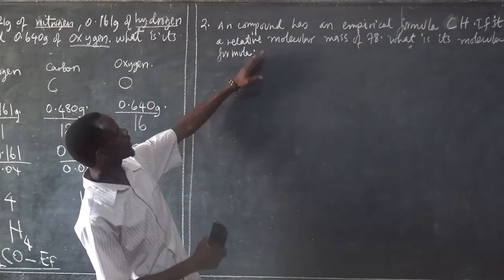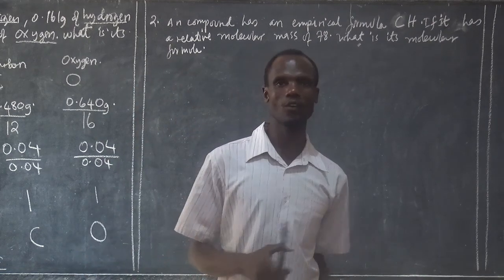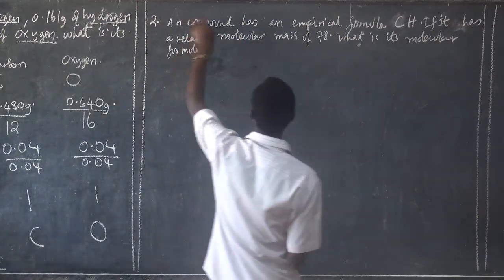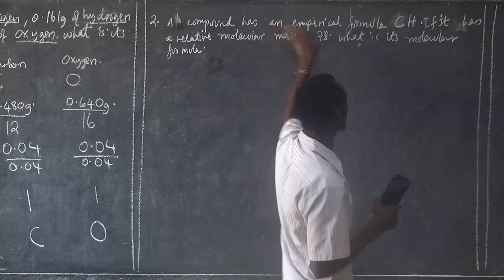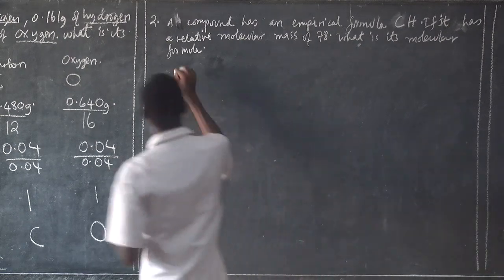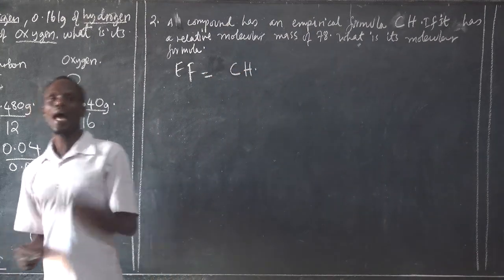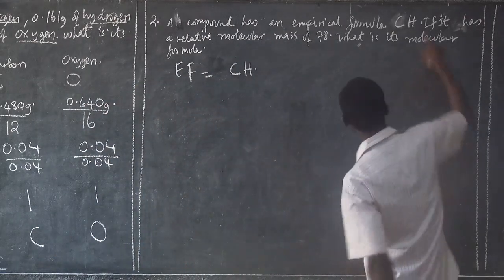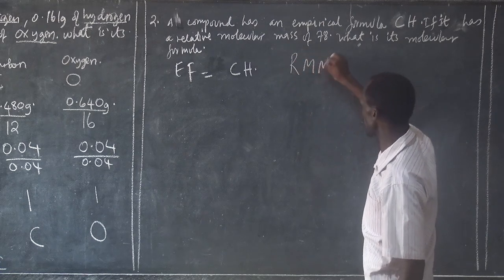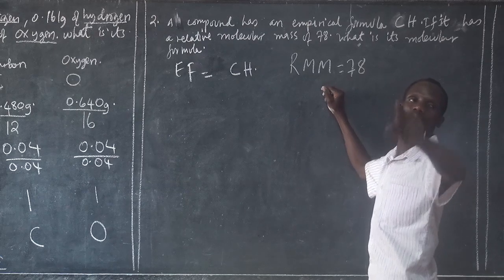I have another question right here. It was a simple but technical question. From this equation, our compound has an empirical formula. From the question, we have already been given the empirical formula: it is equal to C-H. And the relative molecular mass is equal to 78. What we need to find is the molecular formula.